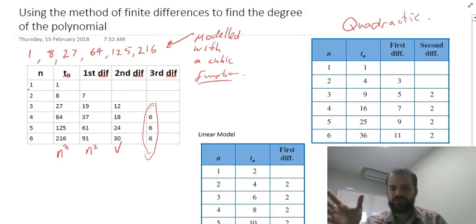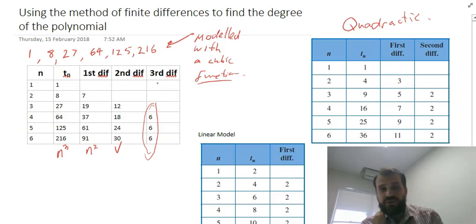So pretty straightforward. You've got a sequence of numbers. You put them in a table, n, t_n. You work through the first, second, third, maybe fourth difference until you figure out whether it's a cubic, a quadratic, a linear, or something greater. That's finite differences and finding the degree of the polynomial.